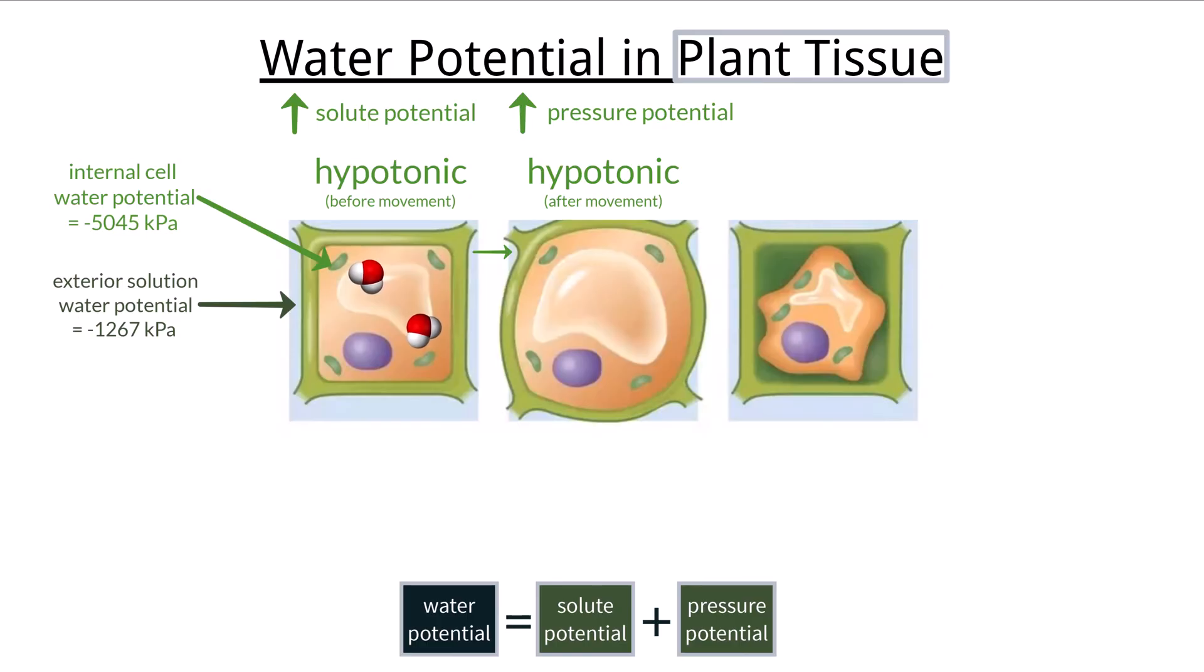With both numbers increasing, we can say that the sum total of water potential increases when a plant is bathed in a hypotonic solution.